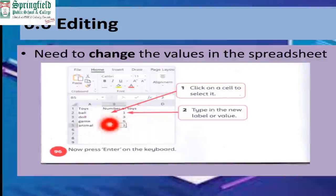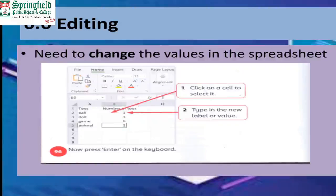Now, editing. Editing means changing the value. We are changing the numbers. Make a table: ball one, doll three, game six, and animal two. Now I have to change - I found two more dolls from my toy box, so I have to click.